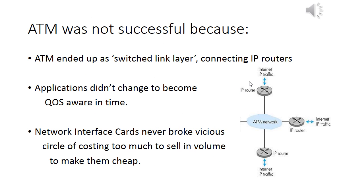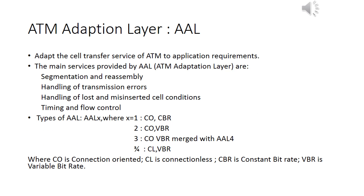ATM was not successful — ATM to the desktop didn't happen. Instead of taking the place of IP, it ended up as a switched link layer. Moreover, applications didn't change to become QoS-aware on time. The use of ATM technology leads to the need for an ATM Adaptation Layer to segment and reassemble higher-layer packets, to handle transmission errors or lost cell conditions, and for timing and flow control.